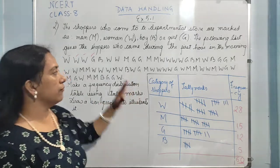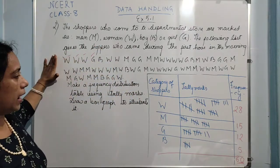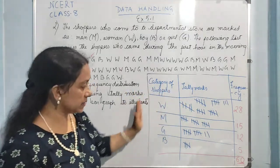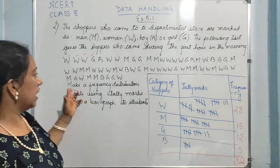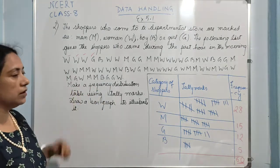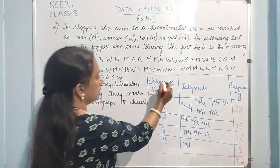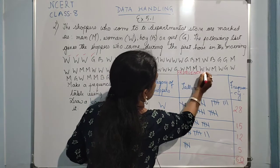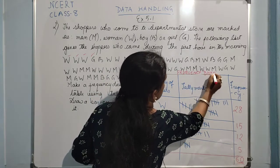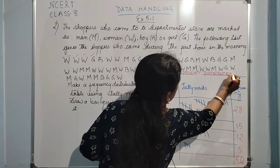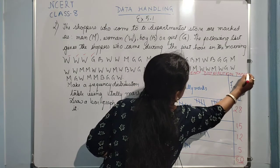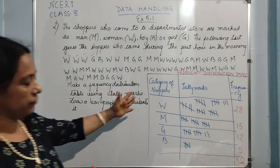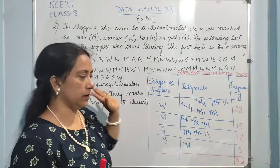So here we have converted this raw data into an organized form according to its frequency. This is what is called a frequency distribution table. They have asked you to make the frequency distribution table only, so just above this you will write 'frequency distribution table'. This is our frequency distribution table, made using tally marks.